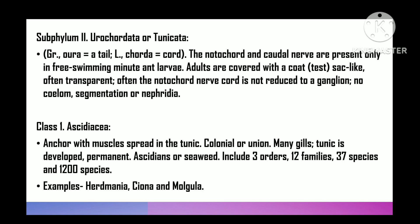Subphylum 2 is Urochordata or Tunicata — 'uro' means tail, 'cordata' means cord. Notochord and nerve cord present in tail only in the minute free-swimming tadpole larva. Adults are sedentary, covered with a tunic, often transparent, usually with notochord absent or reduced to a ganglion. No coelom, segmentation, or nephridia are present.